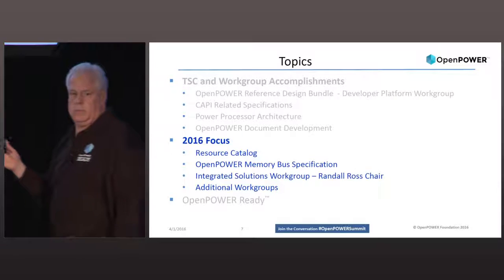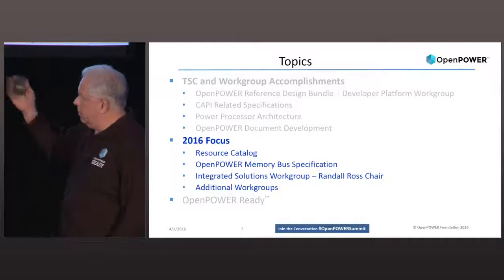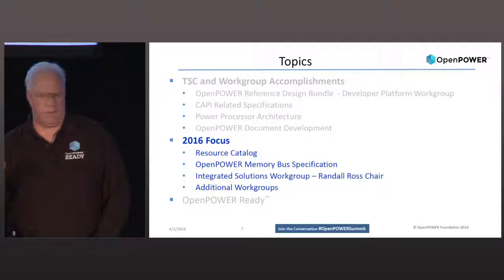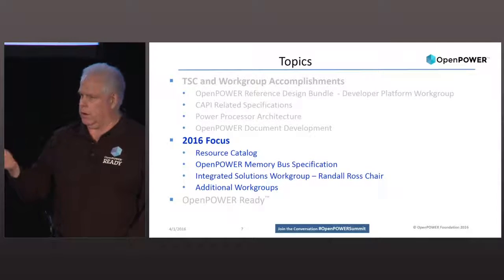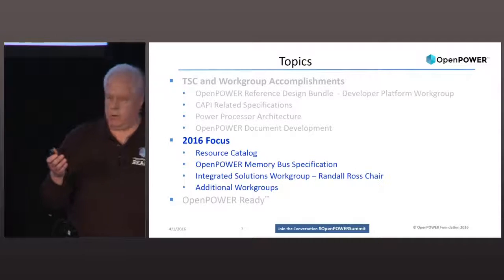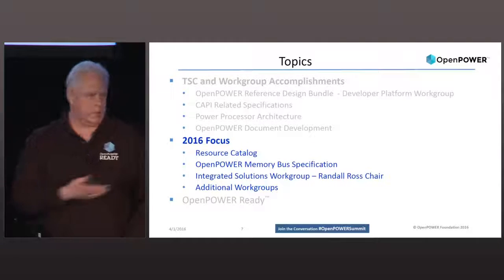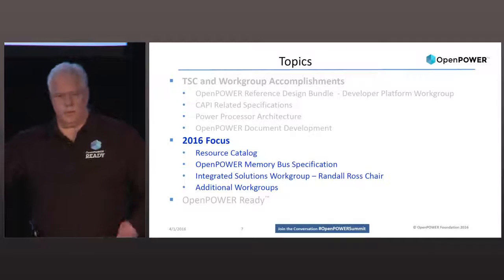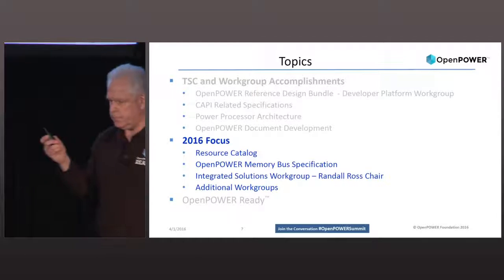So that was last year. Now let's talk about what's happened this year and what we plan to do the rest of the year. I want to talk about something we call our resource catalog, which just went live earlier this week — that's how you get at all the specifications I described. I also want to talk about the Open Power Memory Bus specification in our memory work group, the Integrated Solutions work group, and then briefly touch on some of the other work groups.